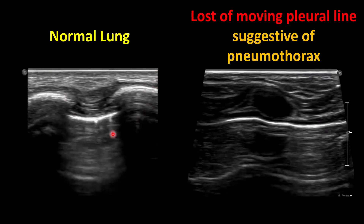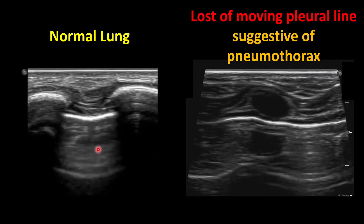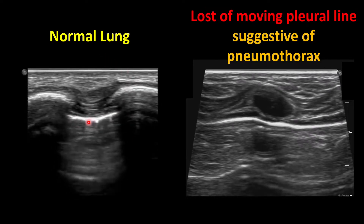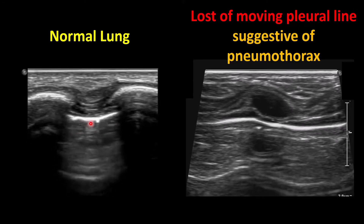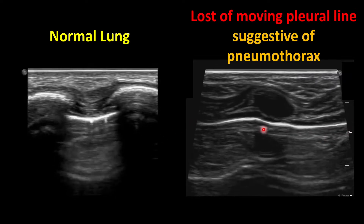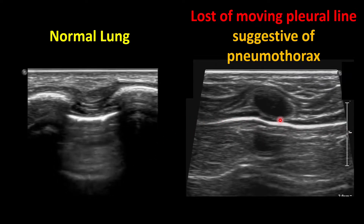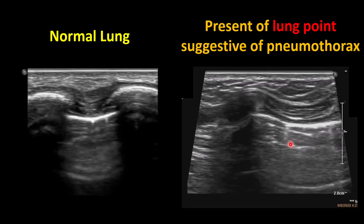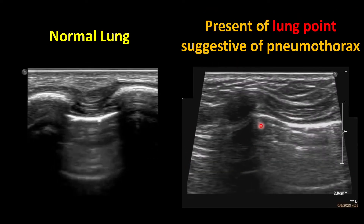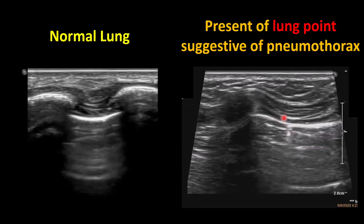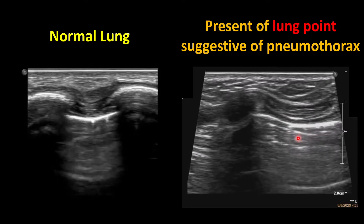Here is an example of normal lung ultrasound, where the pleural line moves nicely. Once there is a pneumothorax, the lungs are detached and you will not be able to see any lung movement. As shown here, there is no lung movement, suggestive of pneumothorax. If you can see the edge of the normal lung adjacent to the pneumothorax area — with normal lung movement on one side and absence on the other — this is what we call a lung point.